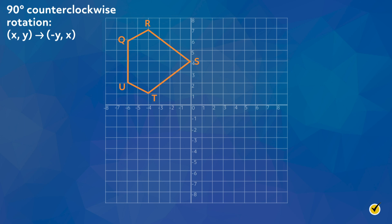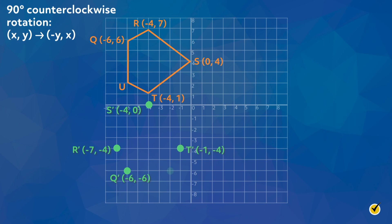Point Q (-6, 6) becomes Q' (-6, -6). Point R (-4, 7) becomes point R' (-7, -4). Point S (0, 4) becomes point S' (-4, 0). Point T (-4, 1) becomes point T' (-1, -4). Point U (-6, 2) becomes point U' (-2, -6).